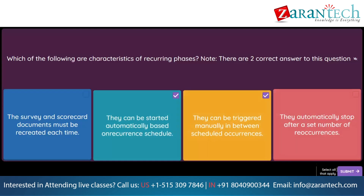Question. User A in SAP Ariba Supplier Lifecycle and Performance fills out a survey and receives the validation pattern error message. What is the reason for this error? Option 1: A required question in the survey is not answered. Option 2: An unsupported file type is attached. Option 3: An answer to one of the questions in the survey is a repeat of a previous answer. Option 4: An answer to one of the questions does not comply with a regular expression.